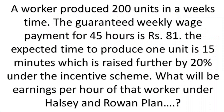A worker produced 200 units in a week's time. The guaranteed weekly wage payment for 45 hours is Rs 81. The expected time to produce one unit is 15 minutes, which is raised further by 20% — so 15 minutes plus 20% of time. Under the incentive scheme, they are getting 20% more time. What will be earnings per hour of that worker under Halsey and Rowan plan?